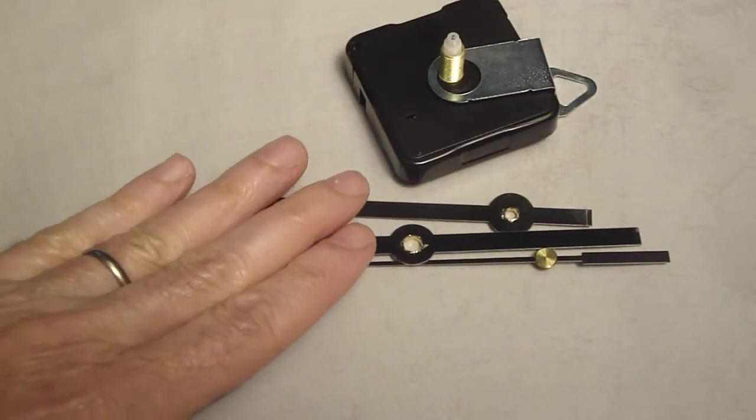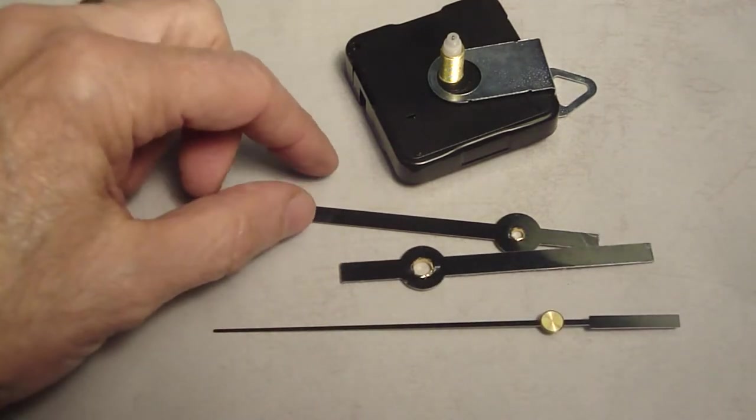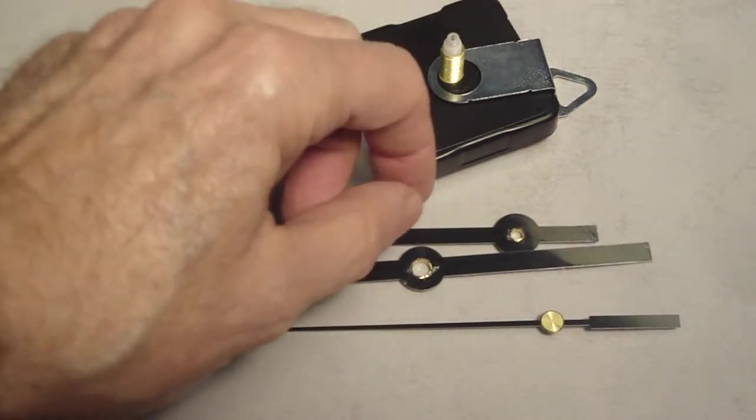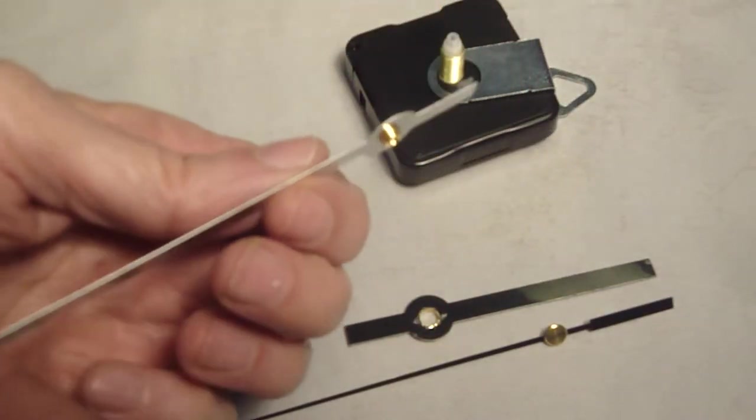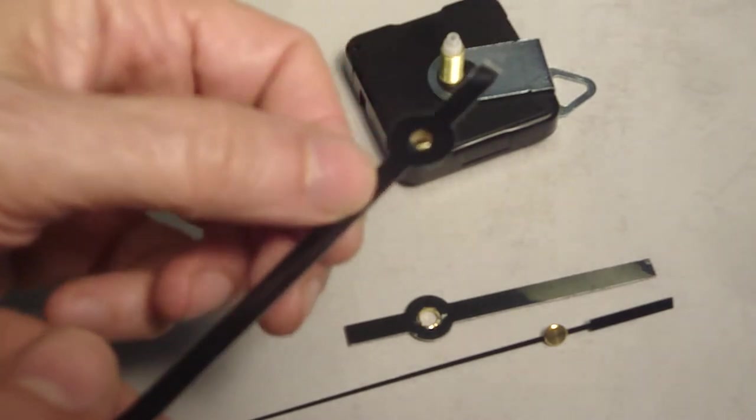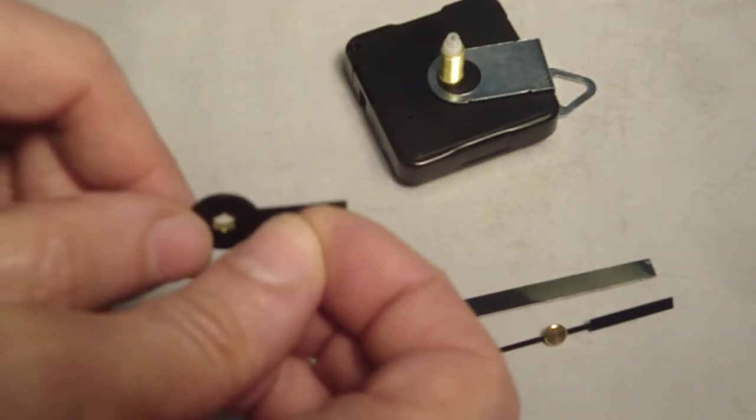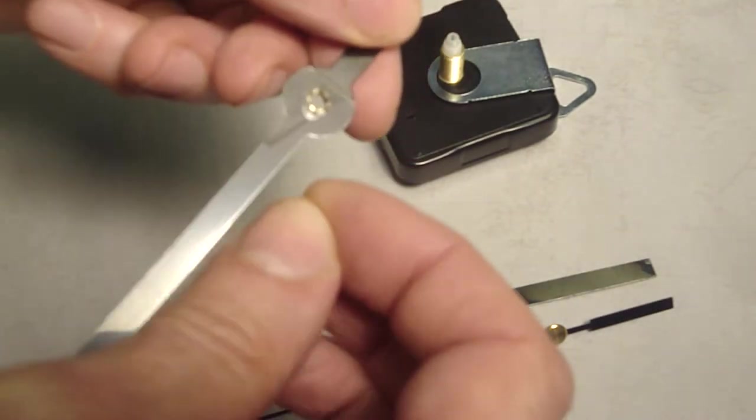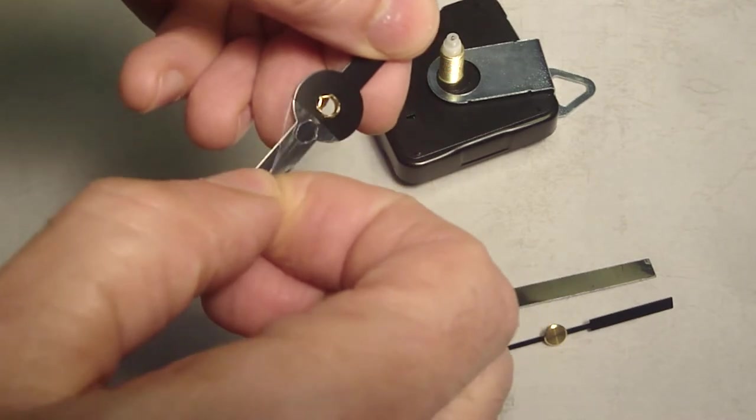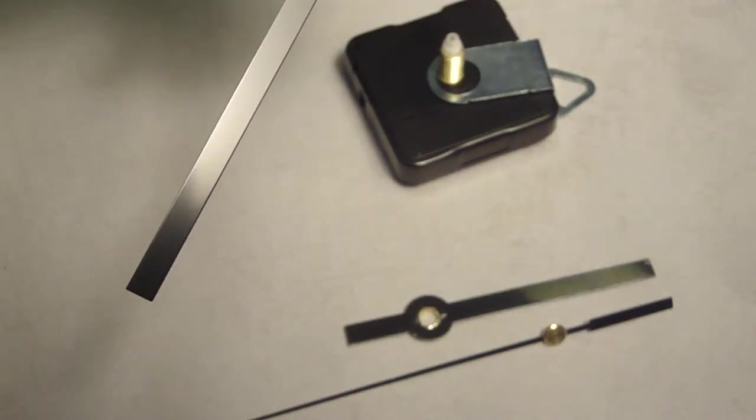I decided to use this set of hands, mainly because the size and the shape match the old hands. And they're very thin aluminum, so you have to be really careful that you don't bend them. And if you do bend them, they're pretty easy to get back into shape. But they do have a plastic sheet over them to protect them, so you've got to peel that off.